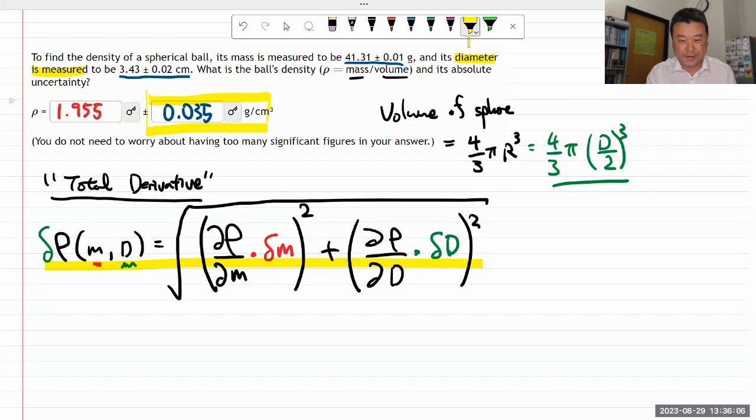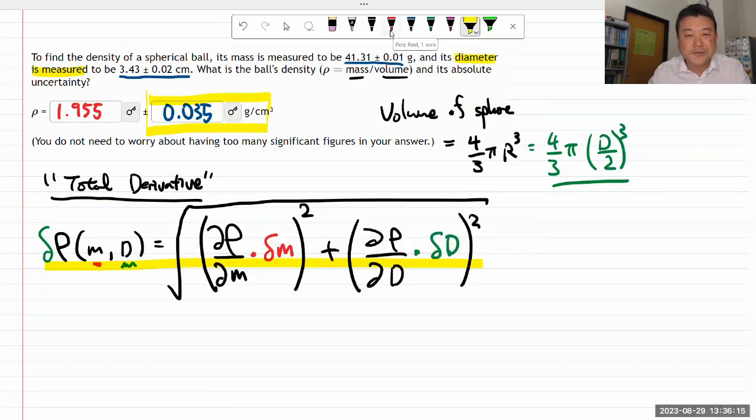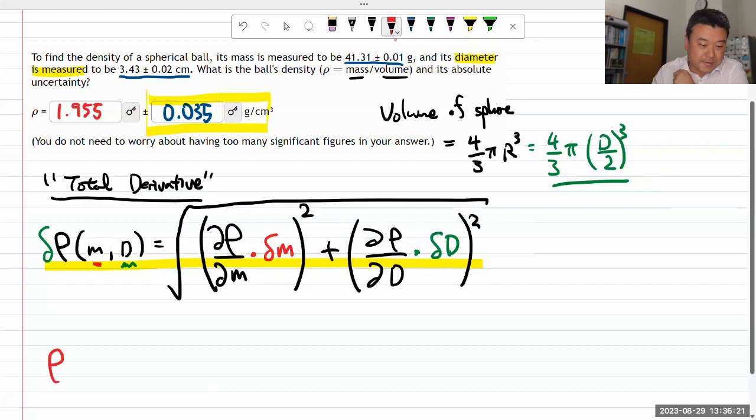You can see this is actually super complicated. Do I want to do it? Let's do it. I think it's going to just take another five minutes or so, and I think we have time to do it. I need the derivatives of this density.